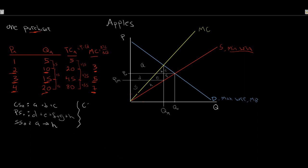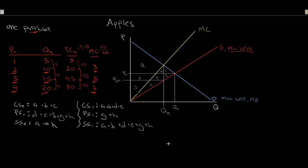However, with a monopsonist, things change. Consumer surplus — the sole purchaser of apples — gets areas A, B, D, E: below their willingness to pay, up to the quantity purchased, above the price paid. Producer surplus becomes G and H. Social surplus is A plus B plus D plus E plus G plus H. We lose C and F as deadweight loss — that is our deadweight loss due to the monopsonist.